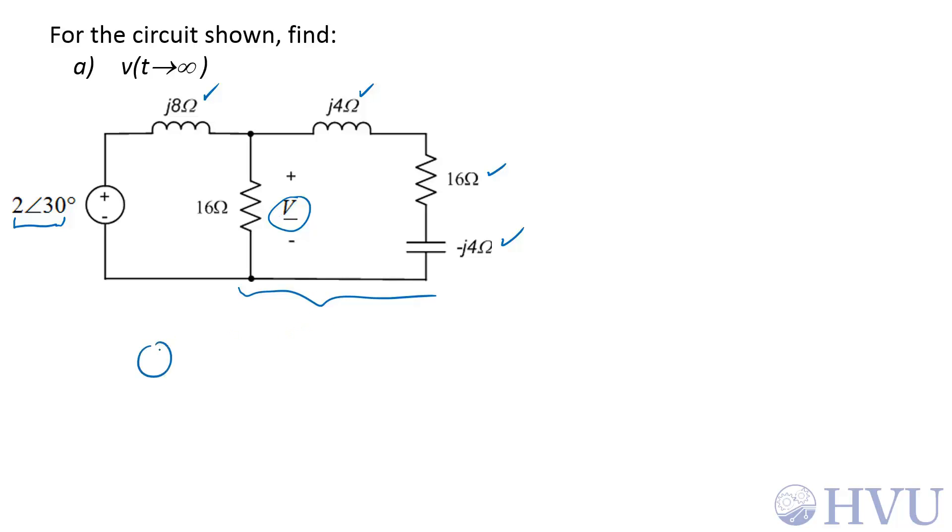This is all imminently reducible though. So I can convert this circuit to the 2 at an angle of 30 degrees, a J8 ohm impedance and some equivalent impedance of this whole mess over here, which is going to be ZEQ. And the voltage across ZEQ can be found from a voltage divider. So first let's find ZEQ, then we can use that to find the voltage phasor.